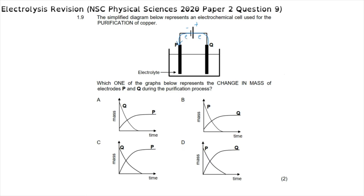The question asks which graph represents the change in mass of electrodes P and Q during the purification process. Since electrons flow from electrode Q, electrode Q must be undergoing oxidation. The impure copper is on electrode Q — as it is oxidized and gives away electrons, copper ions join the solution. Those electrons are transferred through the cell towards electrode P, which attracts only pure copper, where reduction takes place.